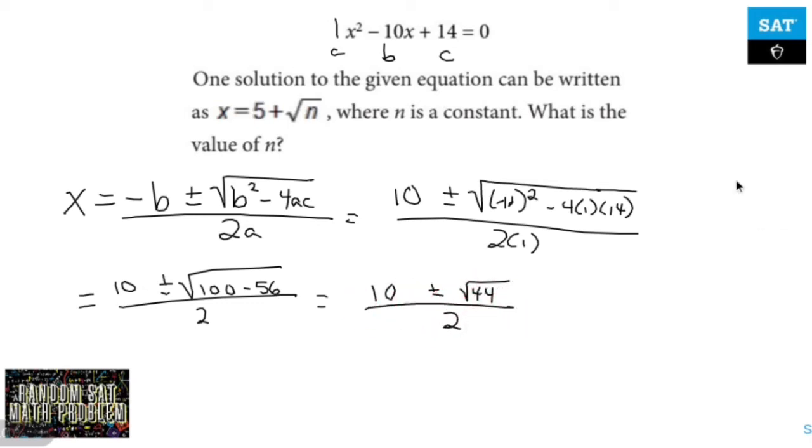Now, if I want to simplify 44, I can write out 44 as 2 times 2 times 11. Bring out a set of 2s, and that gives you 2 root 11.